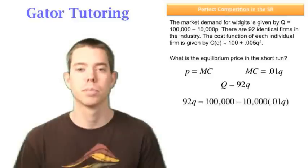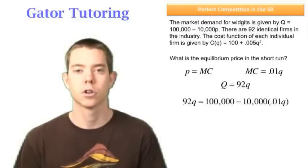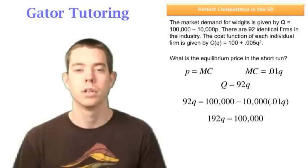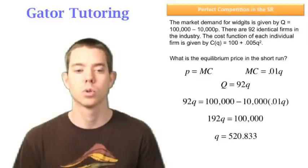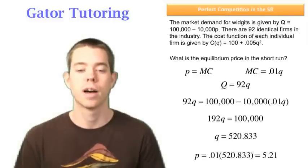Now we can plug in for big Q in terms of little q, and for price in terms of little q. We can solve for little q. We see that little q is equal to 520.833, and now we can solve for price because we know the price is just equal to marginal cost, which was equal to .01Q. So in this case, price equals .01Q.